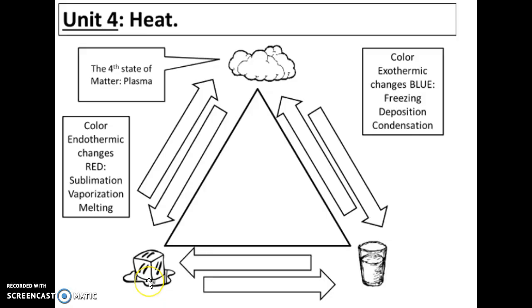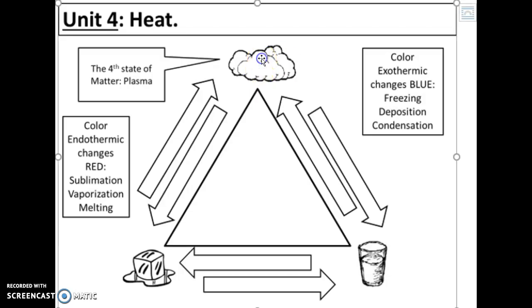You can see on the phase change triangle — here's our solid, looks like an ice cube. We have our liquid in the form of water, and then we also have our gas up here. Another state of matter that we haven't really talked too much about just yet is called plasma. That's our fourth state of matter, and that's kind of off to the side, not necessarily part of the triangle.